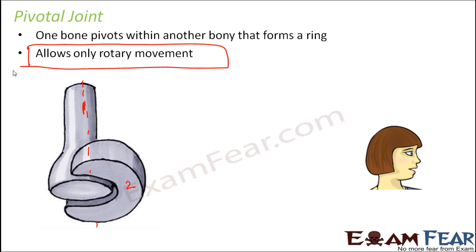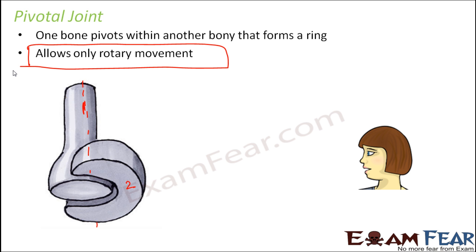For example, when we turn our head from side to side, or when we turn our head from front to back — that is down and up — that turning is such that you cannot turn your head completely. Complete rotation is not possible, but we can definitely rotate it this way and back. So basically it is a rotary movement, but it is not complete rotation; it is partial rotation.